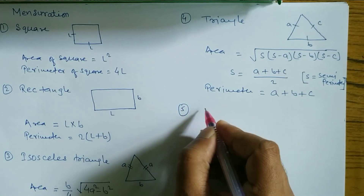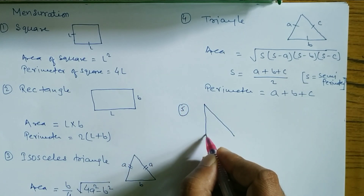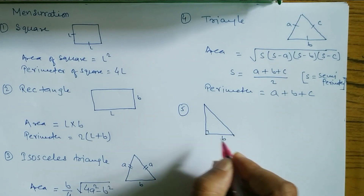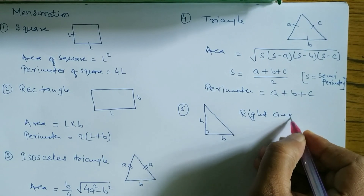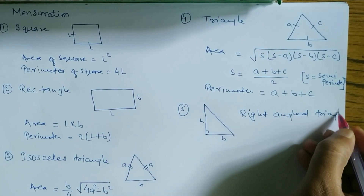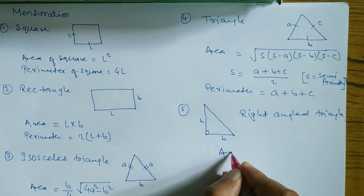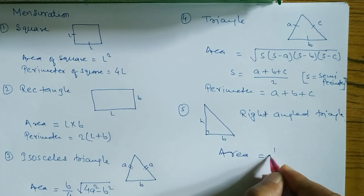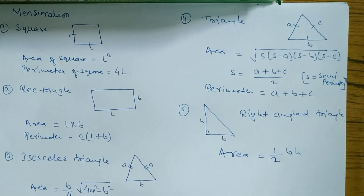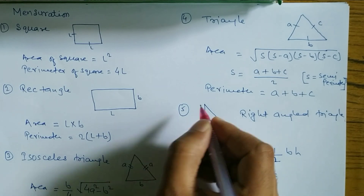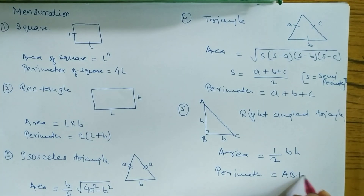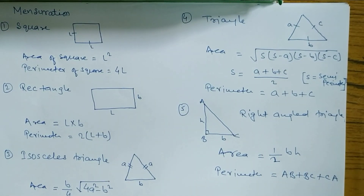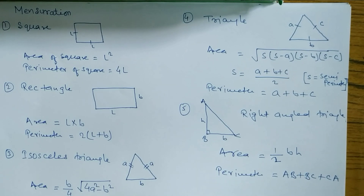Number 5, next triangle is the right angle triangle. This one is base, this one is height. Area formula is half × base × height. Perimeter formula is the sum of all sides — suppose this one is a, this one is b, this one is c — so we can write ab + bc + ca.